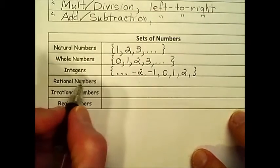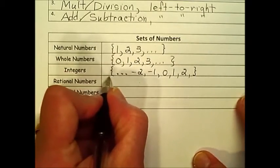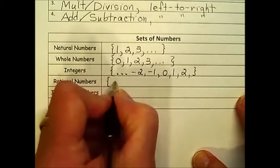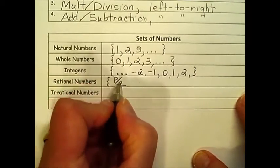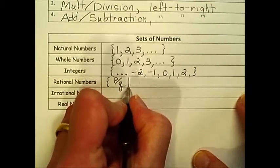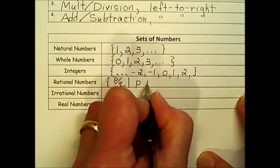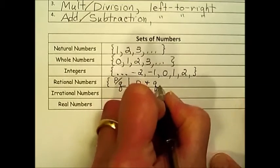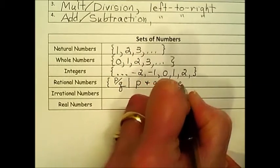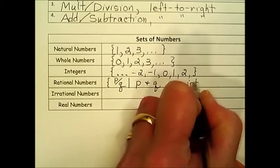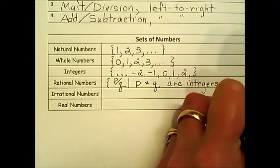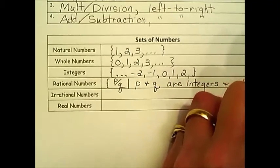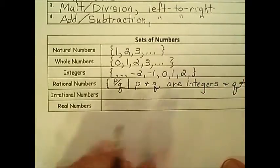The next one is rational numbers, and it's defined using that set builder notation, p over q. It's the set of numbers, p over q, such that p and q are integers, and q is not equal to zero.